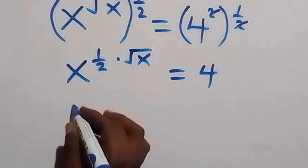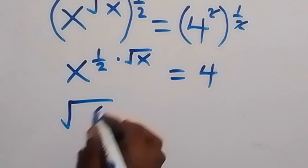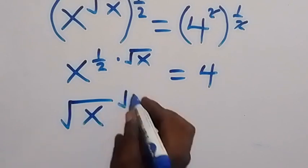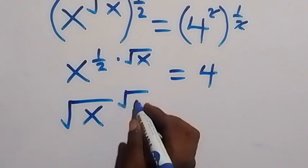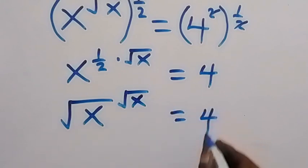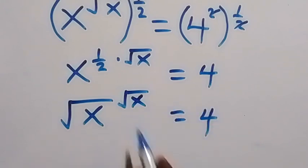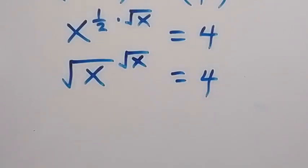X raised to power half can simply be written as square root of x, then raised to power root x, equals to 4. We have a number raised to power the same number. Let's write the right hand side like that.